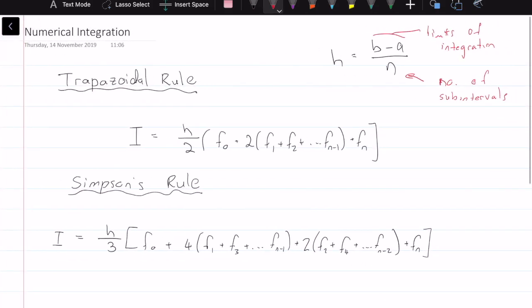Let's see what these functions are telling us. f0 is the function evaluated at the start, the first value or the starting value. This is the end or the last value, and all of this is the rest of the values, which we multiply by 2.